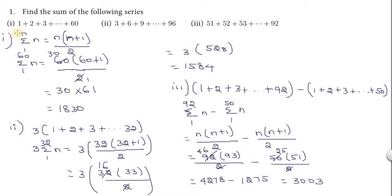Natural numbers are in the order 1, 2, 3 — that is the order. The formula for continuous natural numbers is n into n plus 1 by 2. The summation from 1 to n equals n into n plus 1 by 2. This is the natural number formula.